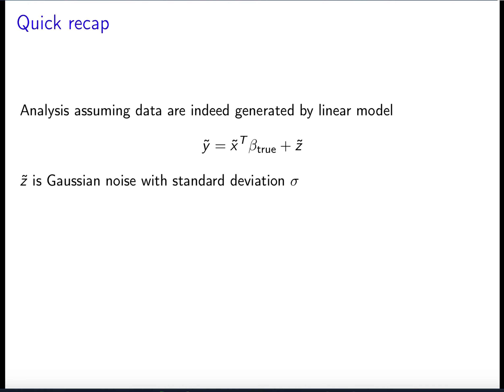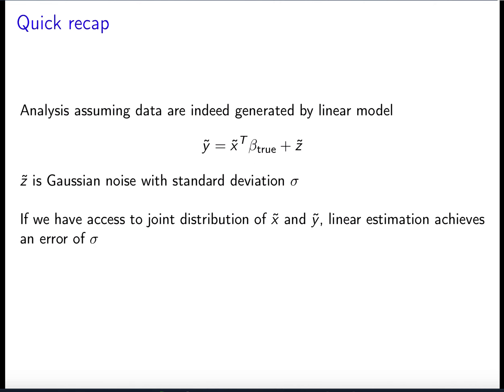We already talked about what happens when the data are indeed generated by a linear model — where the response equals the inner product of the features with some fixed true vector of coefficients. Of course, this will never be the case in practice, but it's a useful approximating model. We have additive noise assumed to be Gaussian with standard deviation sigma. We saw that if you do linear regression knowing the joint distribution — the covariance of features and cross-covariance with the response — you achieve an error of sigma, which is the best possible since z is independent from the features.